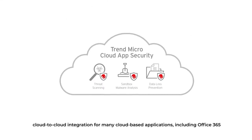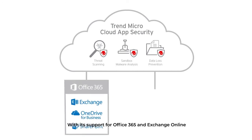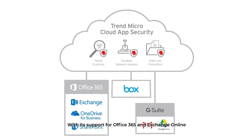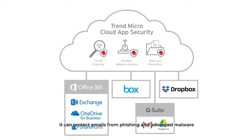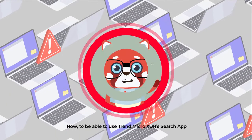Cloud App Security is a solution that provides direct cloud-to-cloud integration for many cloud-based applications, including Office 365. With its support for Office 365 and Exchange Online, it can protect emails from phishing and advanced malware through the use of a virtual sandbox, document exploit detection, and web reputation.